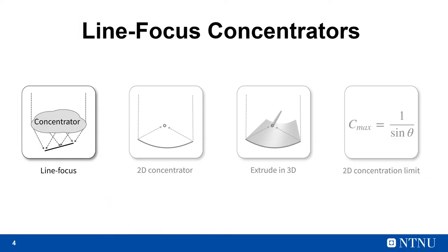When you want a line-focused concentrator, you typically start with a two-dimensional concentrator, and then you extrude it in the third dimension to create a line focus. This works well, but there's one big problem. This approach is limited by the two-dimensional concentration limit, which is orders of magnitude lower than the three-dimensional limit. So to reach higher concentration, we are going to need another approach.